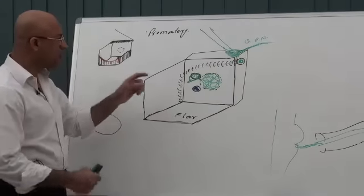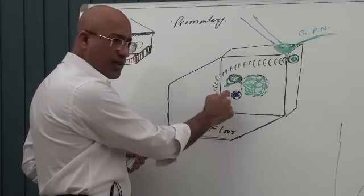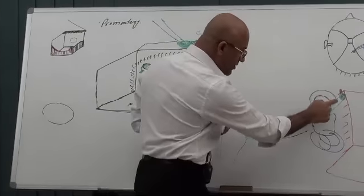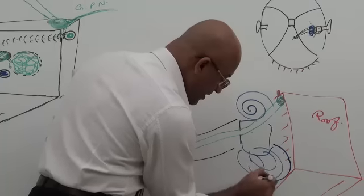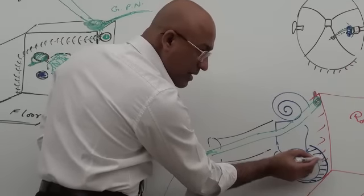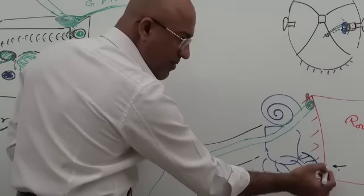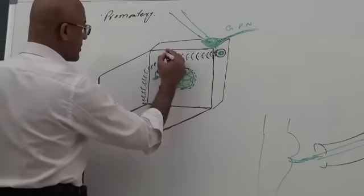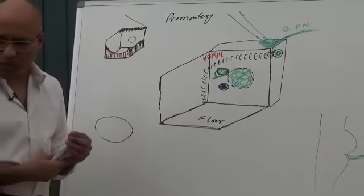The greater petrosal nerve is given there. Another feature in the medial wall: we have talked about the promontory, there is the oval window, there is the round window, there is the facial canal in the upper part as a horizontal prominence. And one more structure — the lateral semicircular canal — also produces a prominence in the medial wall of the middle ear.